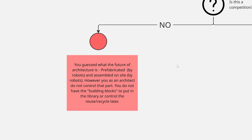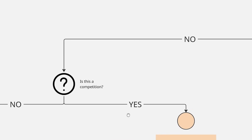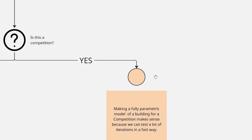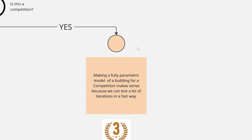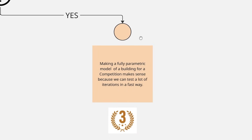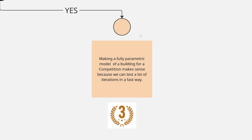If you are dealing with a competition, you arrive at place three — the bronze medal on my graph. That means it's okay. You don't have to concern yourself now with fully parametric elements, but since you're doing a competition, you can do a fully parametric model of a building, and that makes sense. You can test a lot of iterations quickly. We can talk about how Rhino, especially in parametric design, is used for competitions.